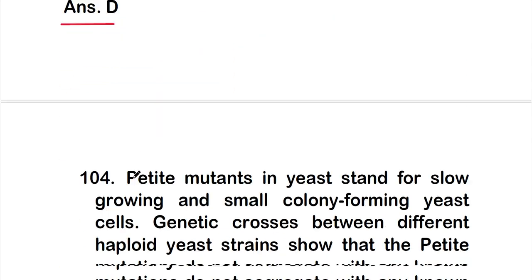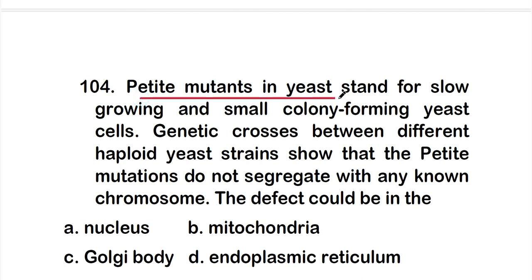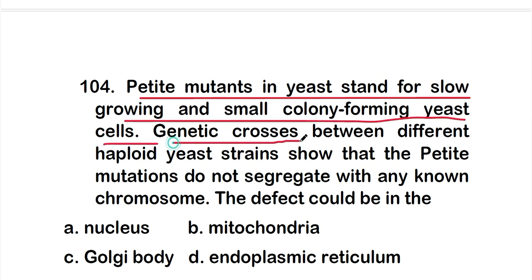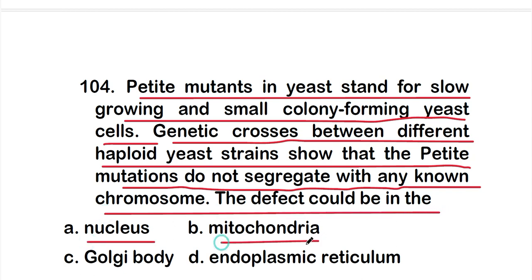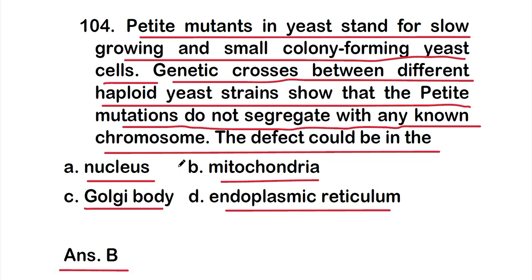Question 104: petite mutants in yeast stand for slow-growing and small colony-forming yeast cells. Genetic crosses between different haploid yeast strains show that the petite mutations do not segregate with any known chromosome. The defect could be in: Option A Nucleus, Option B Mitochondria, Option C Golgi body, Option D Endoplasmic reticulum. The right answer is Option B — Mitochondria, because the petite mutations do not segregate with any known chromosome, indicating a mitochondrial defect.